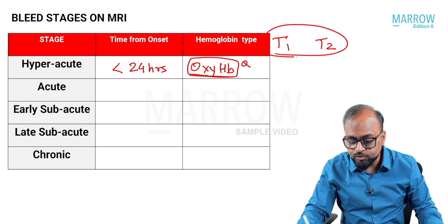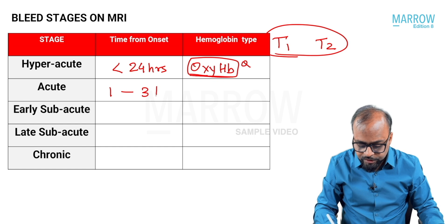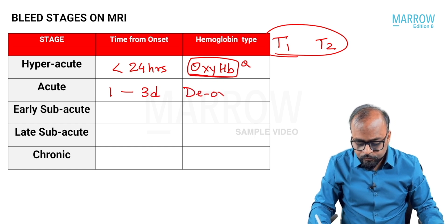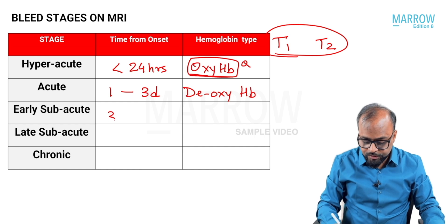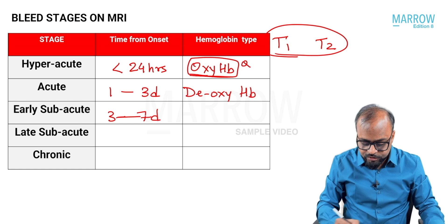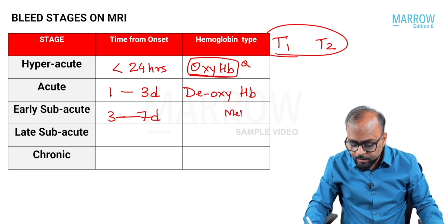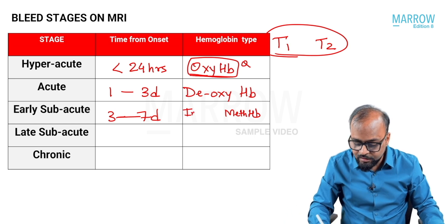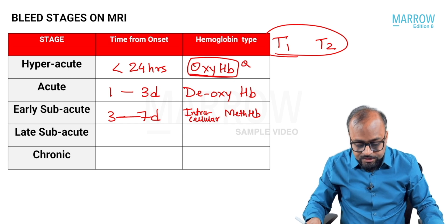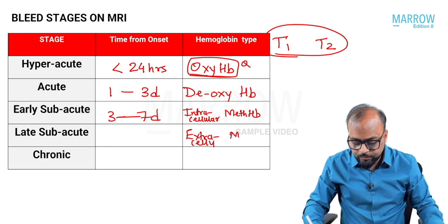An acute bleed is from one to three days, when oxyhemoglobin becomes deoxyhemoglobin. From three to seven days it is early subacute bleed, where deoxyhemoglobin becomes methemoglobin — specifically intracellular methemoglobin.